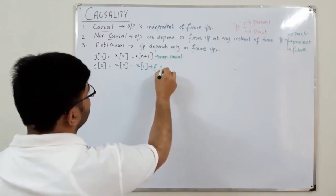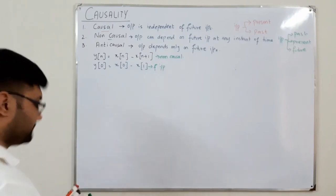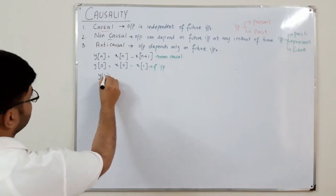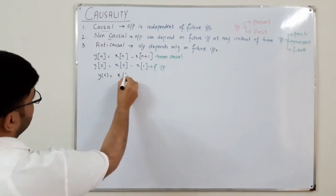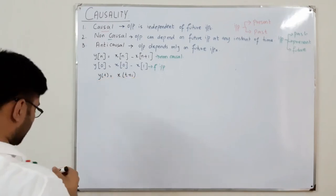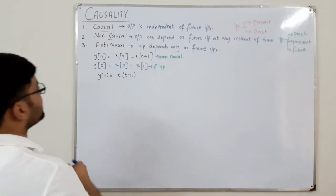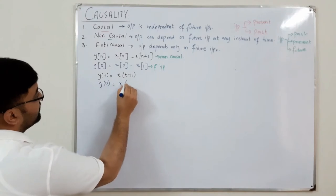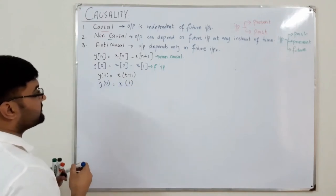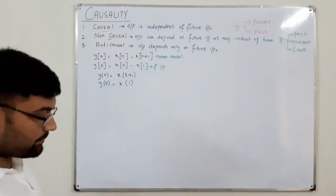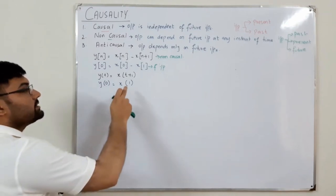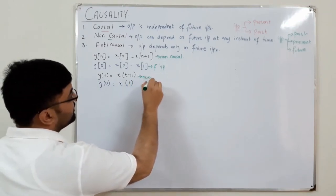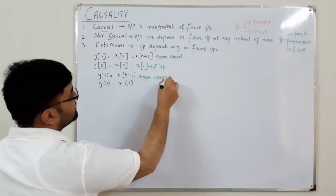Similarly, for y(t) = x(t+1), checking at t = 0 gives y(0) = x(1), meaning the present output depends on the future input. This confirms it is a non-causal system.